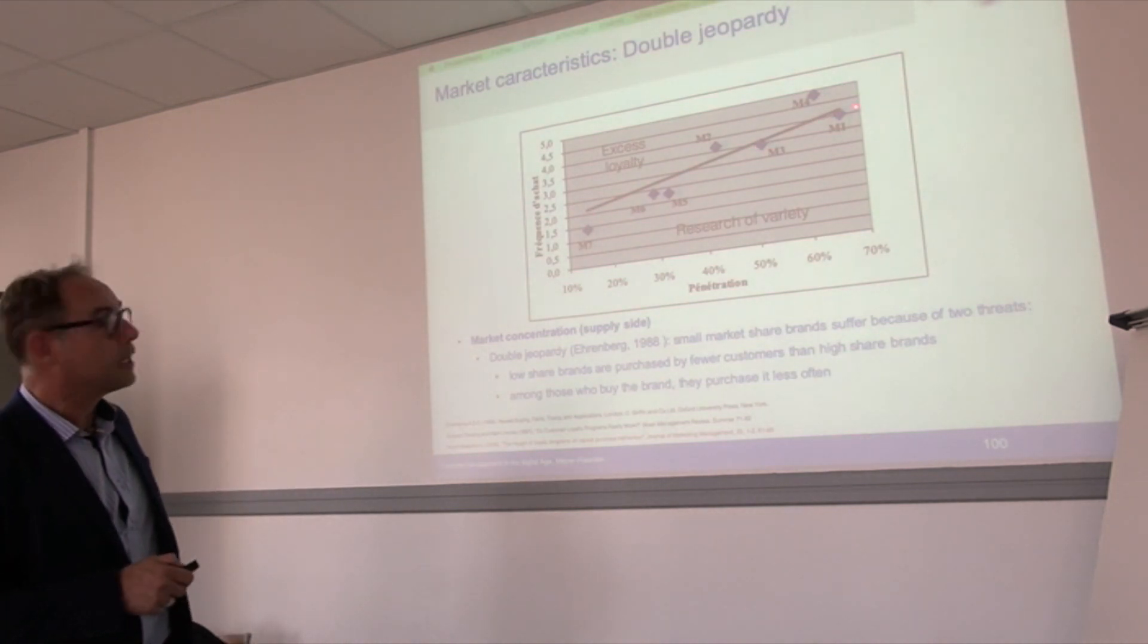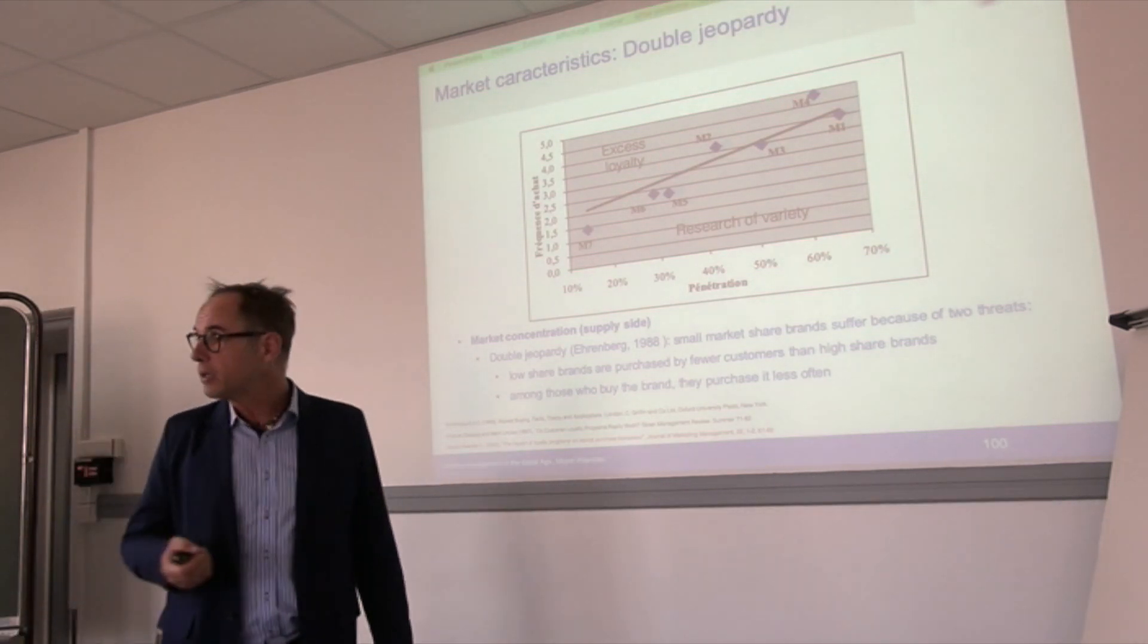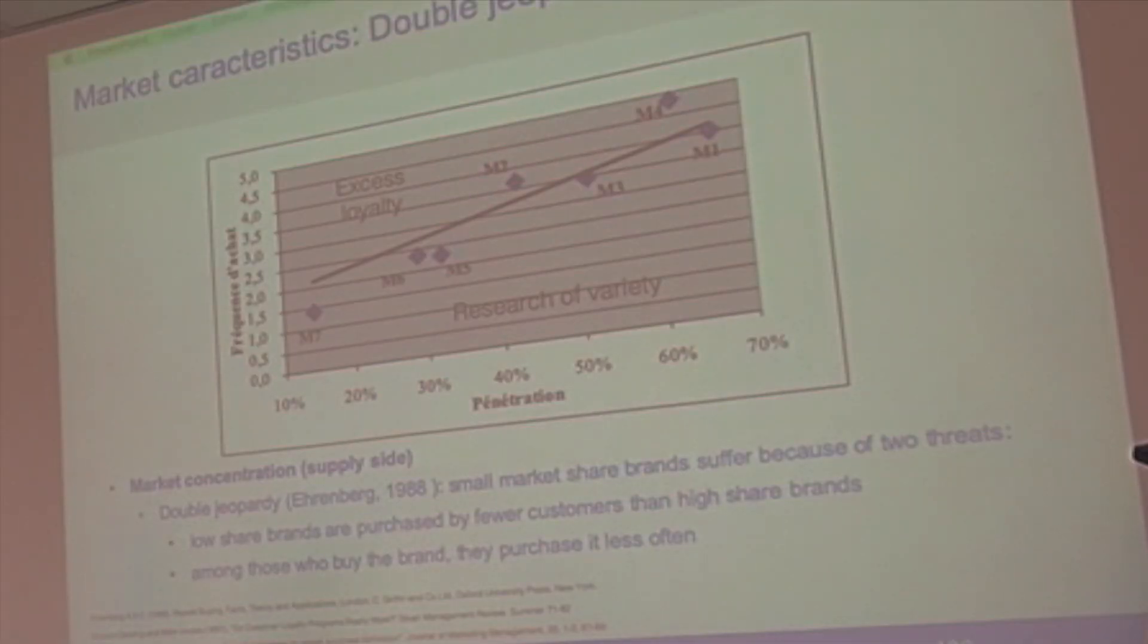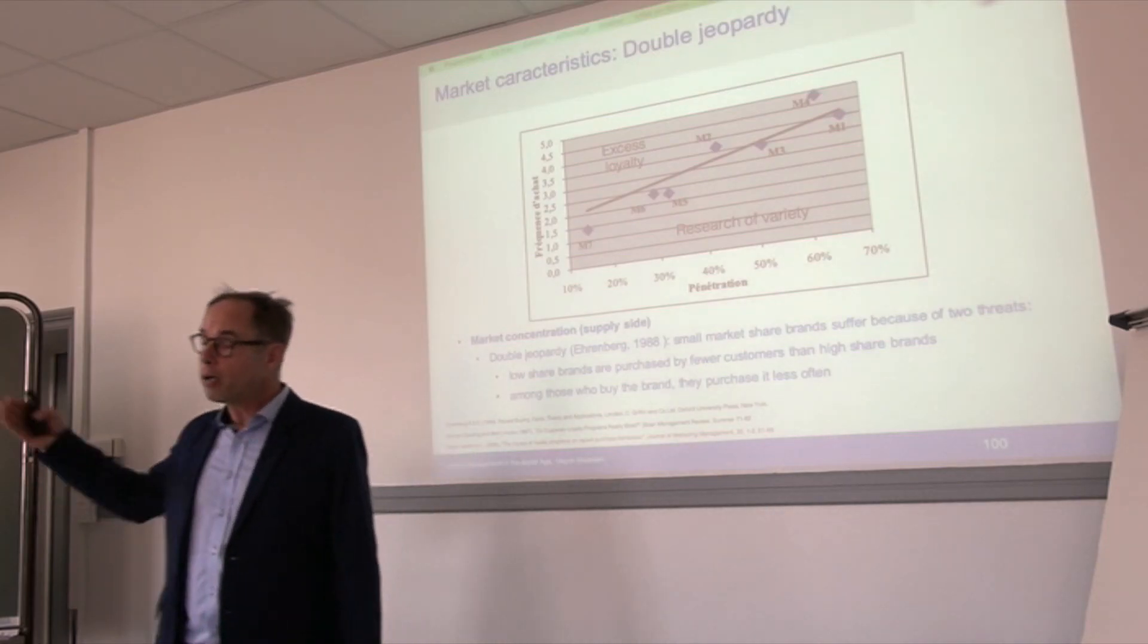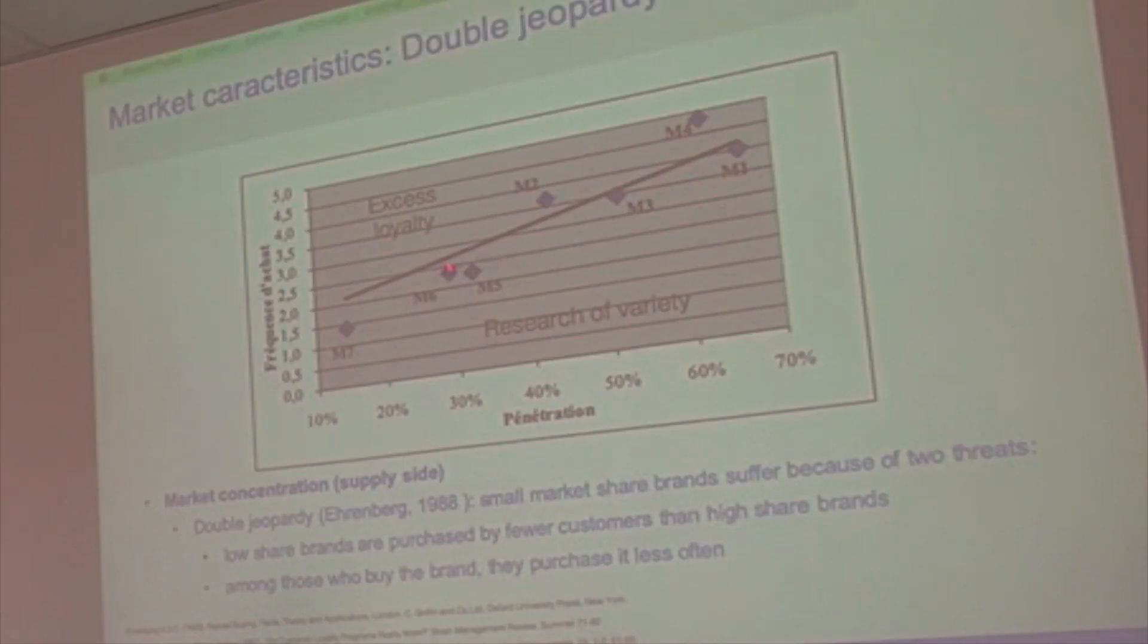This is a benchmark norm calculated by a theoretical model. All what is above the line is called excess - this is brought by a marketing tool. All what is on the line is normal, so there's no impact of the loyalty program. For example, stores one and three, and also two and four, have excess loyalty which is brought by the loyalty program. Leading brands have more efficient marketing actions, including loyalty programs.